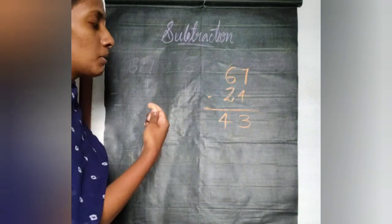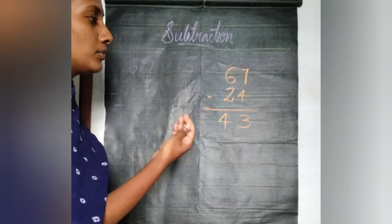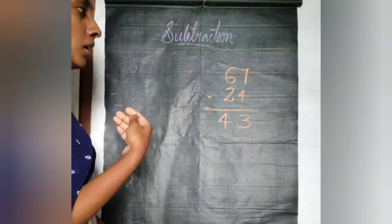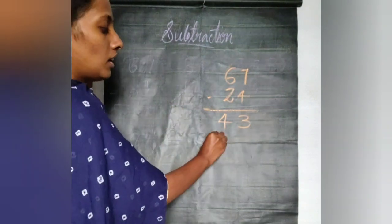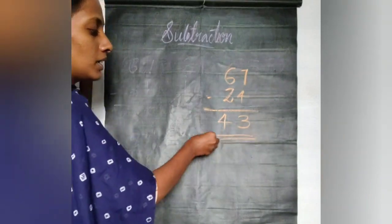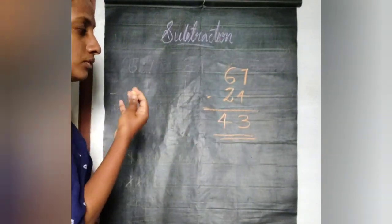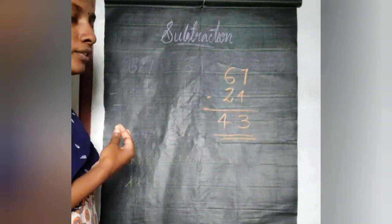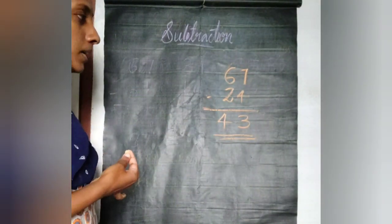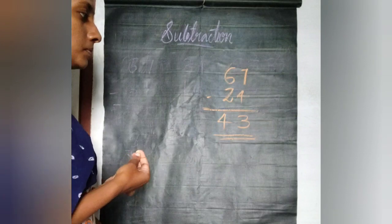So after 24 birds fly away, the remaining birds on the tree are equal to 43.